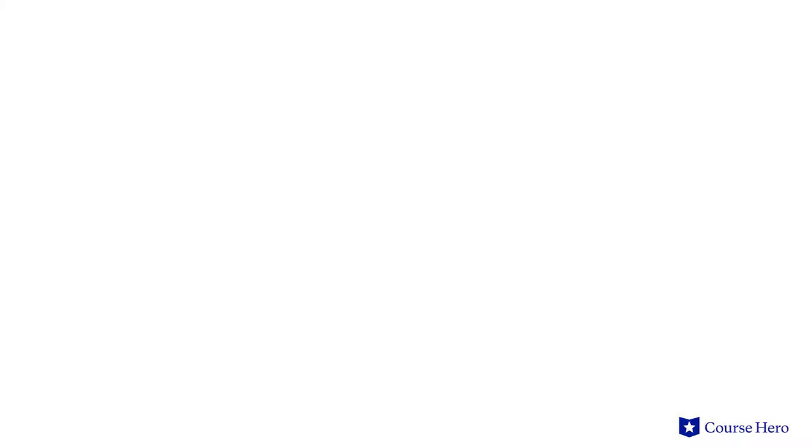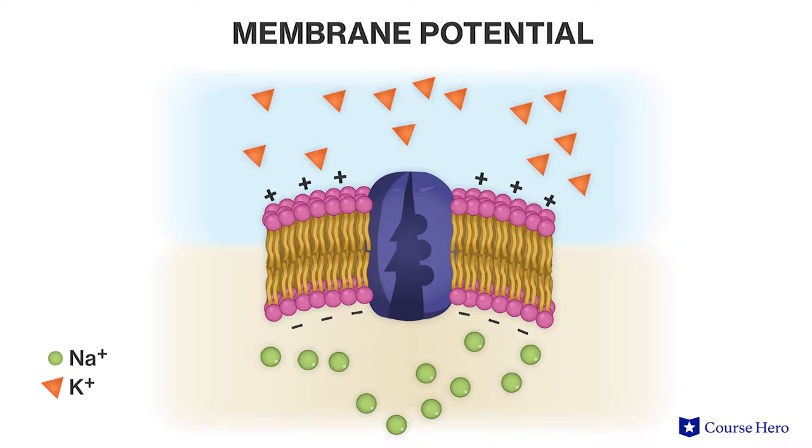All cells have what is called a membrane potential, or voltage, across their membranes. One of the important jobs of active transport is to maintain this membrane potential. The membrane potential results from an uneven distribution of positive and negative ions across the membrane. In addition to this electrical gradient, the uneven distribution of ions also results in an ion concentration gradient.